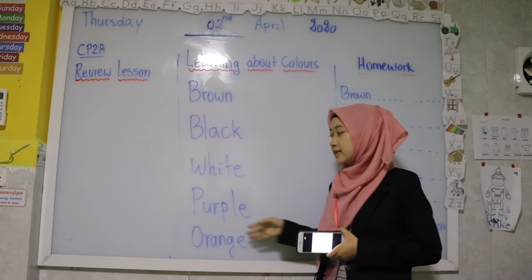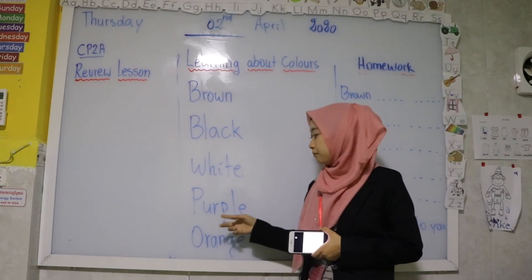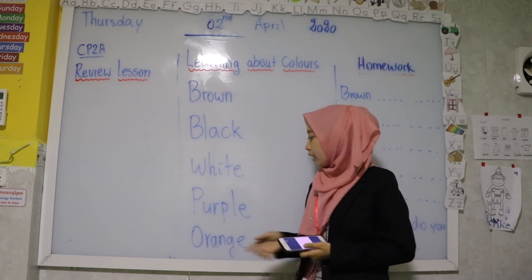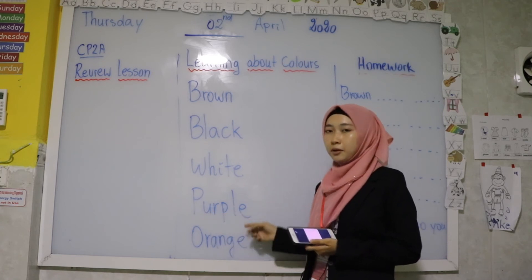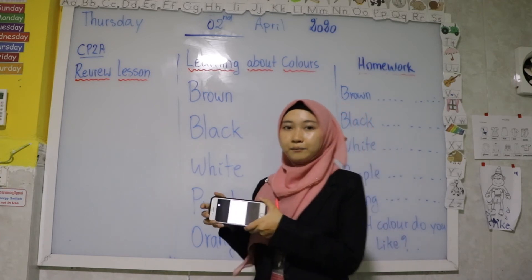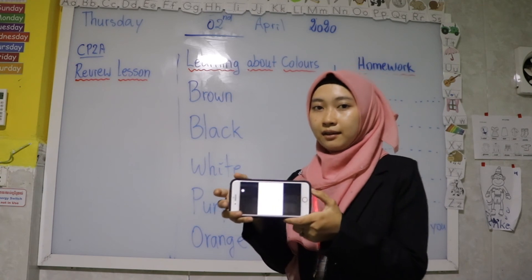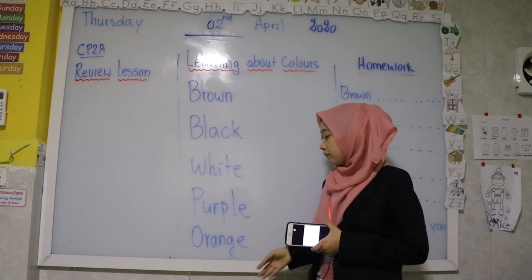Let's move to the next word, which is purple. Purple is spelled P-U-R-P-L-E. Purple. This is purple color. Let me show you the purple color. Let's make sure that you remember the color clearly.